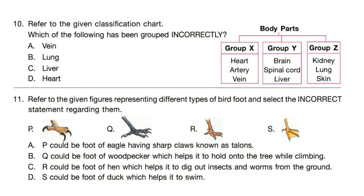Question 10: Refer to the given classification chart. Which of the following has been grouped incorrectly? There are body parts grouped as X, Y and Z. You have to find out the body part which is incorrectly grouped. Correct answer is option C — Lever.